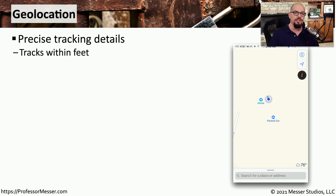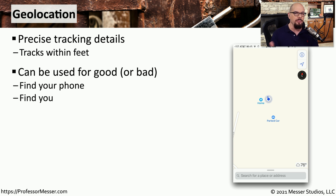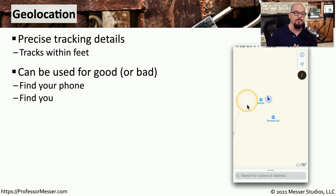The geolocation functionality of our mobile devices allows us to get very accurate measurements on where a device is physically located in the world. This commonly uses GPS and wireless networks to triangulate the exact location of these mobile devices. This can be great if you lose your device because you can get an accurate map showing exactly where the device might be. However, this can also be a privacy concern since it effectively shows where you are as well, so there are advantages and disadvantages to using geolocation.